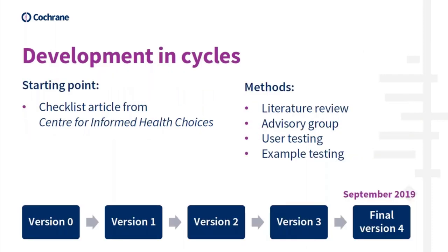A little bit about how we developed it. Our starting point was a checklist that we had developed with other hats on as part of the Center for Informed Health Choices here in Norway. We then carried out a literature review, went through an advisory group made up of Cochrane stakeholders, and carried out user testing among Cochrane contributors. We tested the checklist on examples, and we've done this in several rounds until we ended with the last version — though this is obviously not going to be the final version. We're assuming the checklist will continue to be developed and continue to improve.